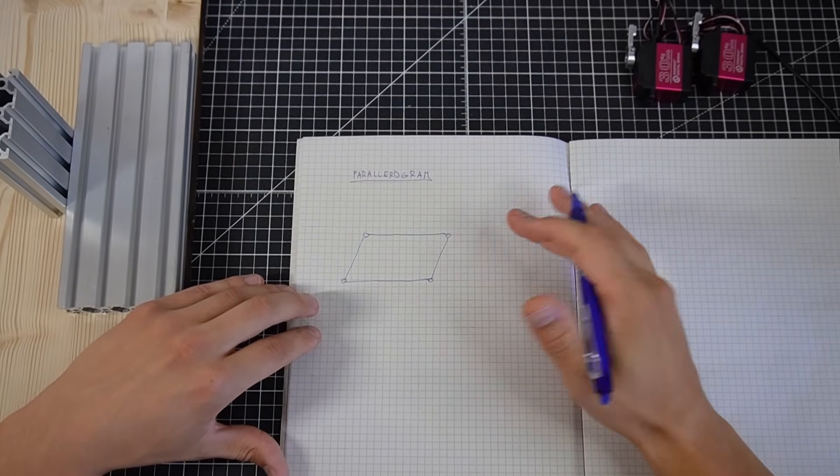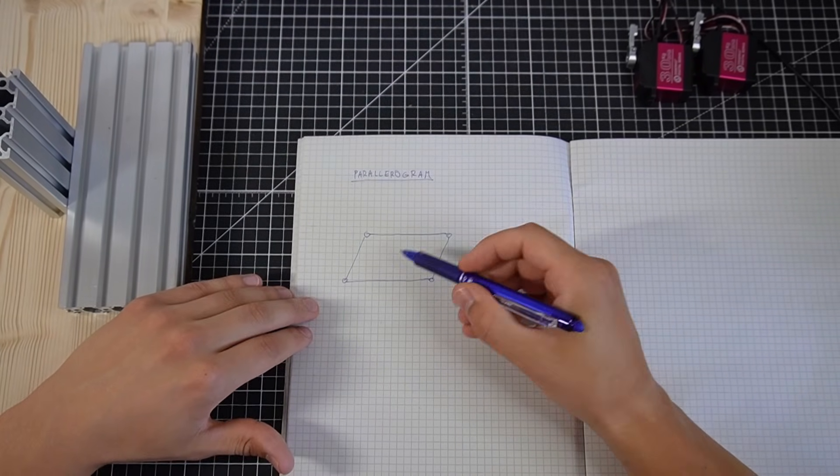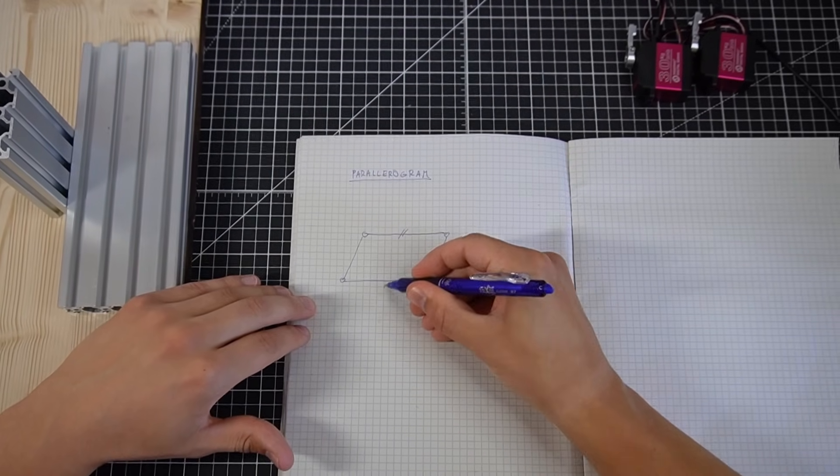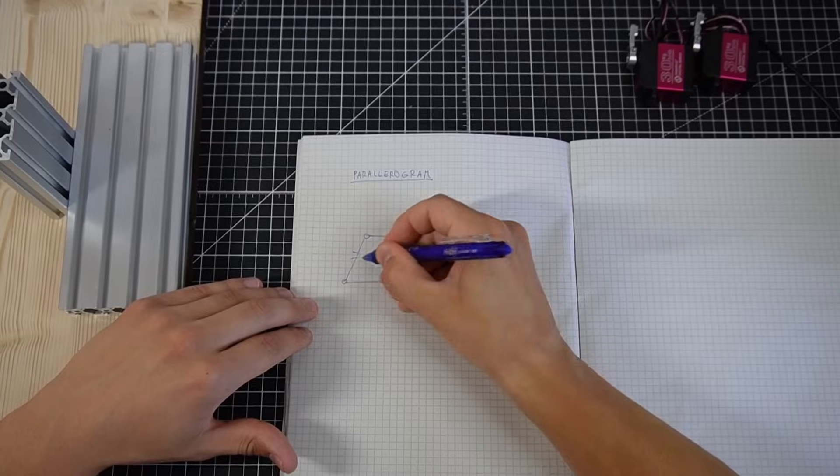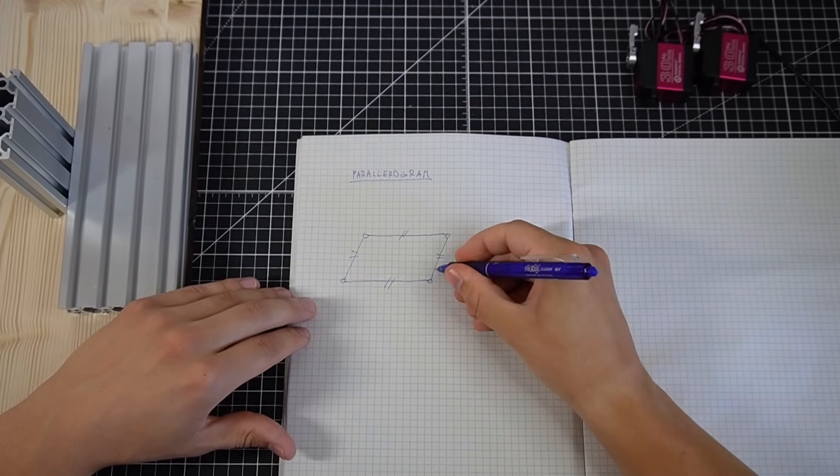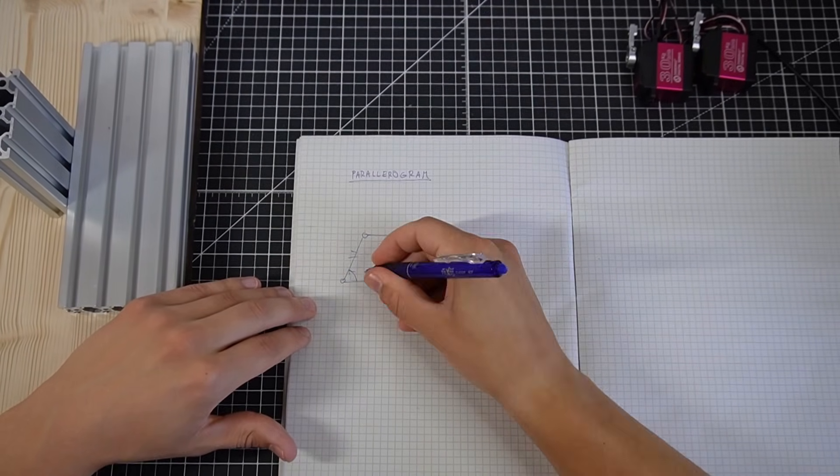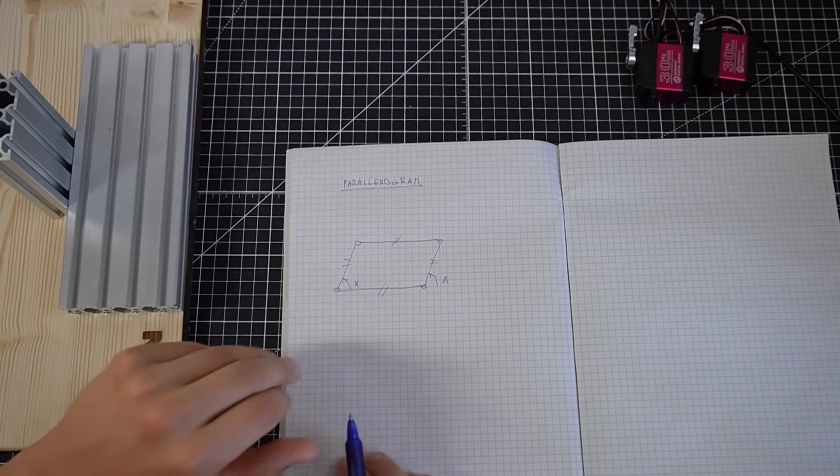This is a parallelogram. It's a four-bar linkage where opposite sides have the same length and are parallel to each other. So these two sides are parallel and these two sides are parallel. This means that if you set this angle, the opposite side is just gonna copy it. This property is gonna be useful for our leg designs.